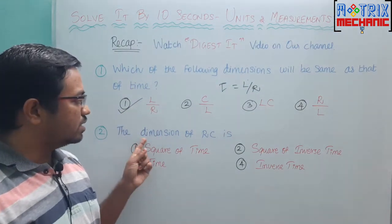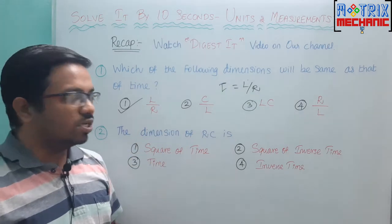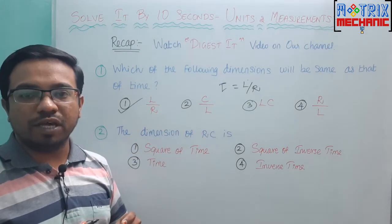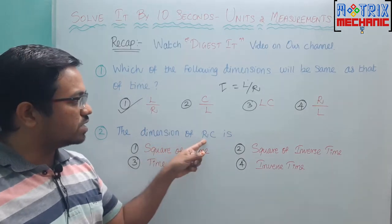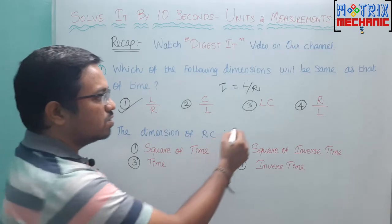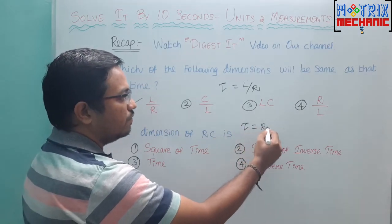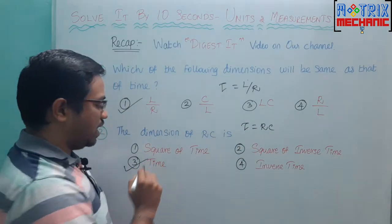And similarly, the dimension of RC. This type of question has been asked many times in the NEET exam and as well as in AIIMS. The dimension of resistance into capacitance is also nothing but time. We call it as a time constant. So our answer is three.